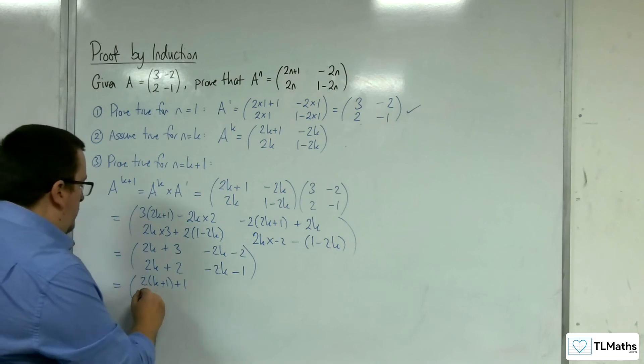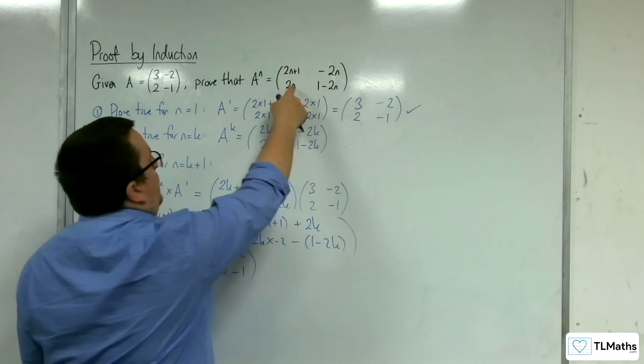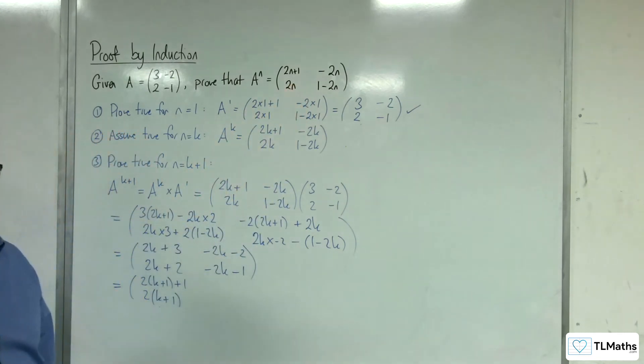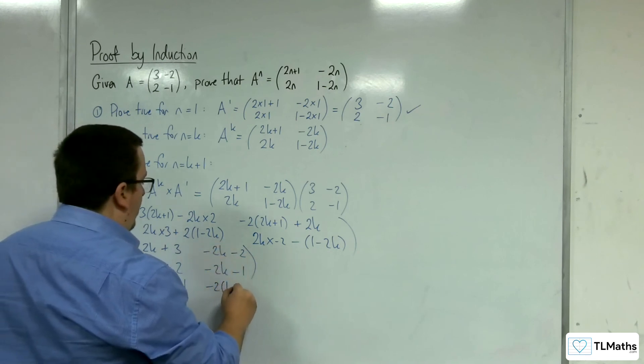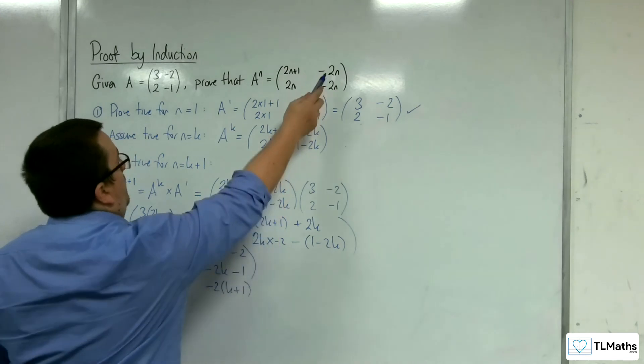I also know 2 lots of k+1, so factorising that marries up with the 2n, the 2 lots of k+1, if n was k+1. I've also got here -2k take away 2, so I can factor out the -2, and I get the k+1, which is what I'm looking for.